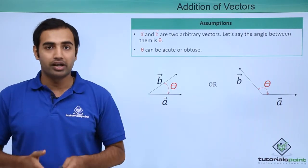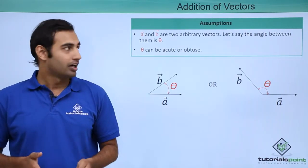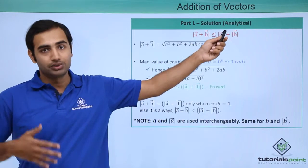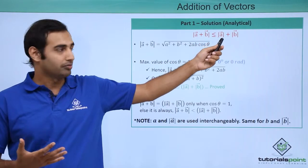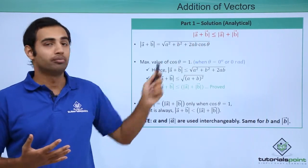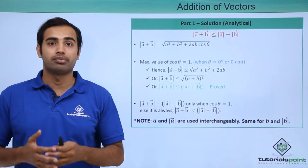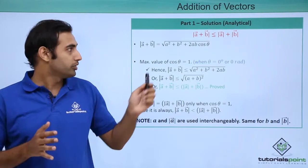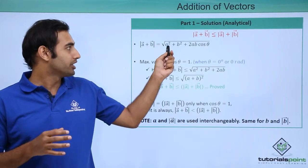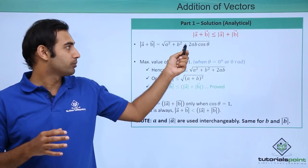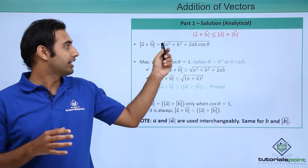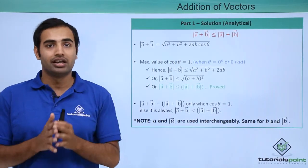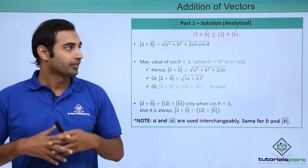Tackling part 1 first, I have to prove this specific inequality. I will start by writing the value of modulus of A plus B vector. I know the formula — it simply comes out to be the square root of A squared plus B squared plus 2AB cos theta, where A and B are the magnitudes of the two vectors and theta is the angle between them.